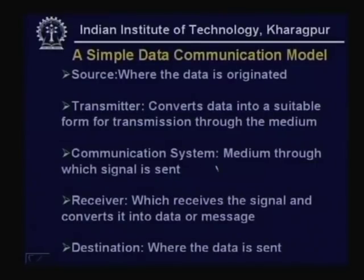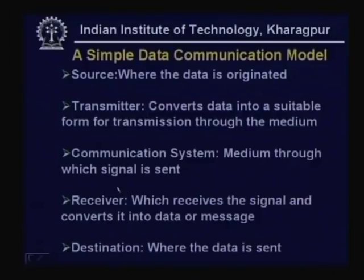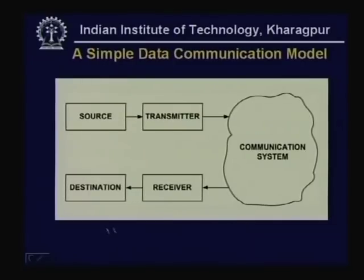The medium can be very simple — a piece of wire or a pair of wires like coaxial cable, twisted pair — or it can be optical fiber, a local area network, or a wide area network. By communication system, we mean it can be a very simple system like a pair of wires, or a very complex system like a LAN, WAN, or the internet. We shall consider different types of communication systems.